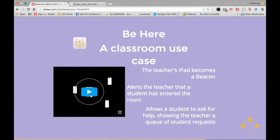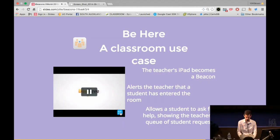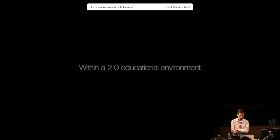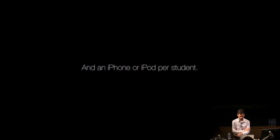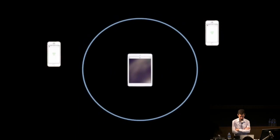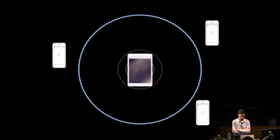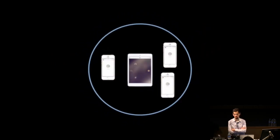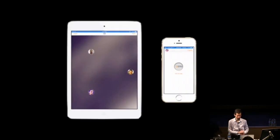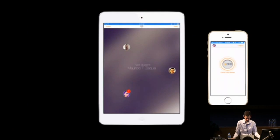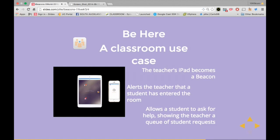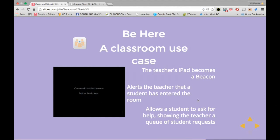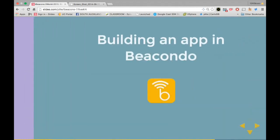B Here is that class enrollment app I was talking about. It tells the teacher who's in the classroom, people can use their devices to raise their hand, and it gives you roll information — who has actually entered the room. Another fun one to play with if you're interested in this technology.